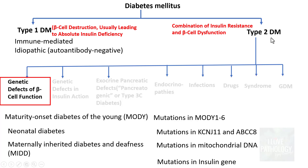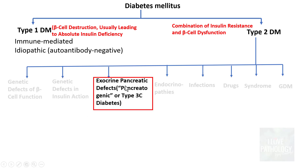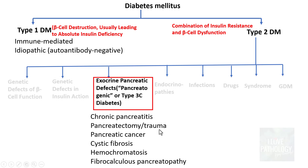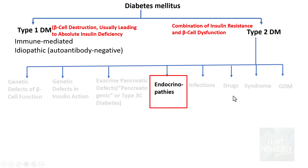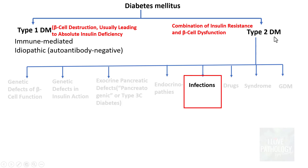Genetic defects in insulin action include Type A insulin resistance and lipoatrophic diabetes mellitus. Exocrine pancreatic defects that can cause diabetes include chronic pancreatitis, trauma or pancreatectomy, pancreatic cancers, cystic fibrosis, hemochromatosis secondarily affecting the pancreas, and fibrocalculous pancreatopathy. Endocrinopathies such as acromegaly, Cushing syndrome, hyperthyroidism, pheochromocytoma, and glucagonoma can also result in type 2 diabetes mellitus.